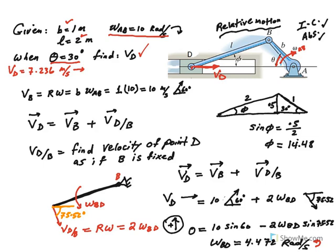How do we solve this problem by relative motion? We use this equation. If we want to find velocity of D, we want to translate with B and rotate about B. So what we have to do is find the velocity of B first.